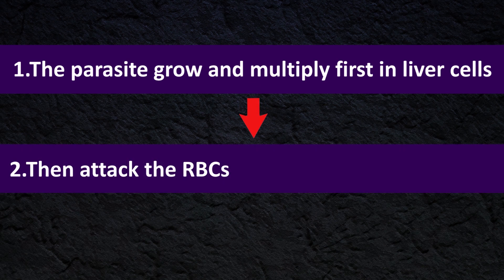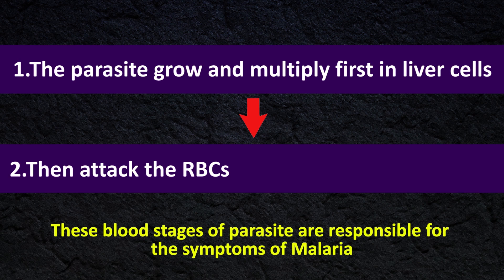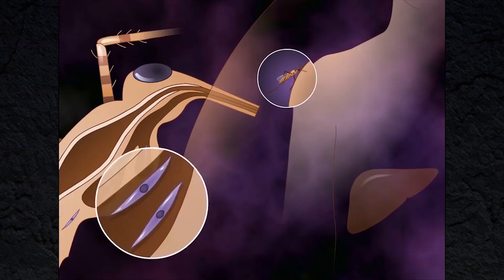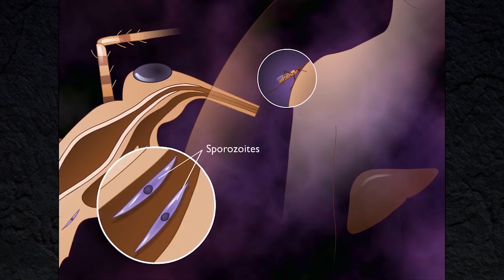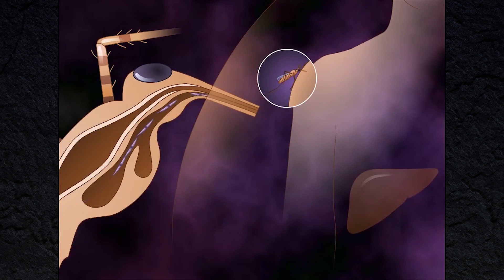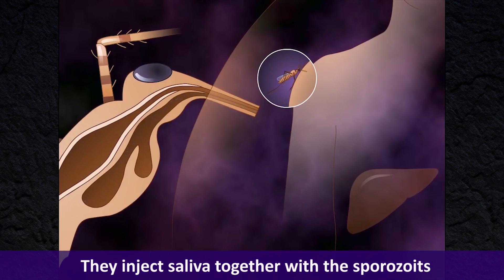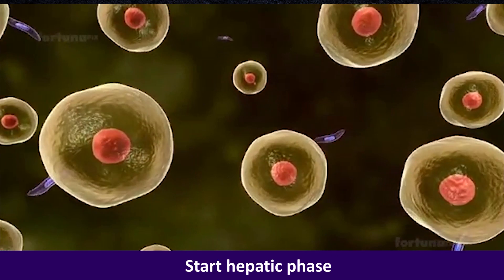Therefore in human, the parasite grows and multiplies first in the liver and then attacks the red blood cells. These plastic stages of parasite are responsible for the symptoms of malaria. Infected anvilous mosquito contain spirocytes, a form of parasite, in their salivary gland. When they bite a human they inject saliva together with spirocytes.